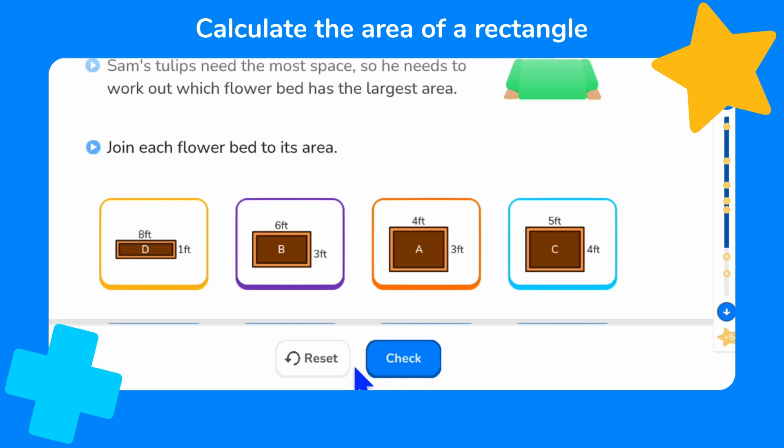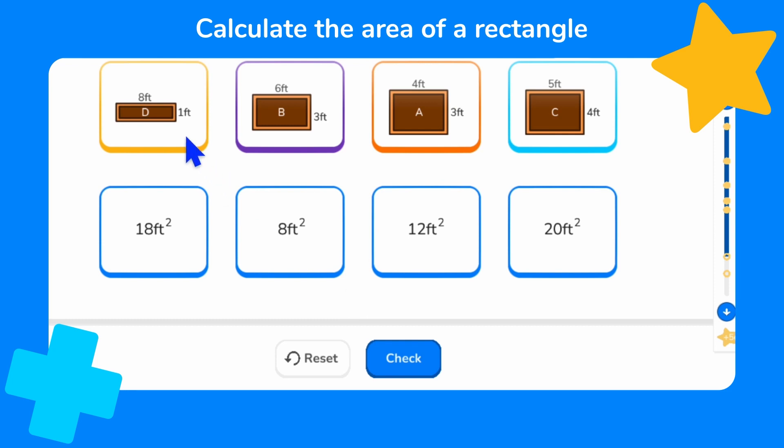Well done if you remembered that we need to solve length times width. So, to work out the area of the first flower bed, we need to solve eight feet times one foot. Eight times one equals eight, so I know that the area of the first flower bed is eight square feet.